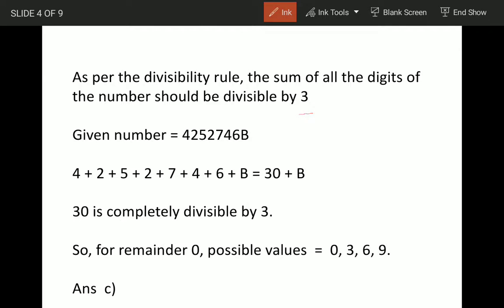From the rule of divisibility, we know that when the sum of digits of a number is divisible by 3, the number itself is divisible by 3. We'll make use of this rule. The given number is 4252746B, so let's add the digits.